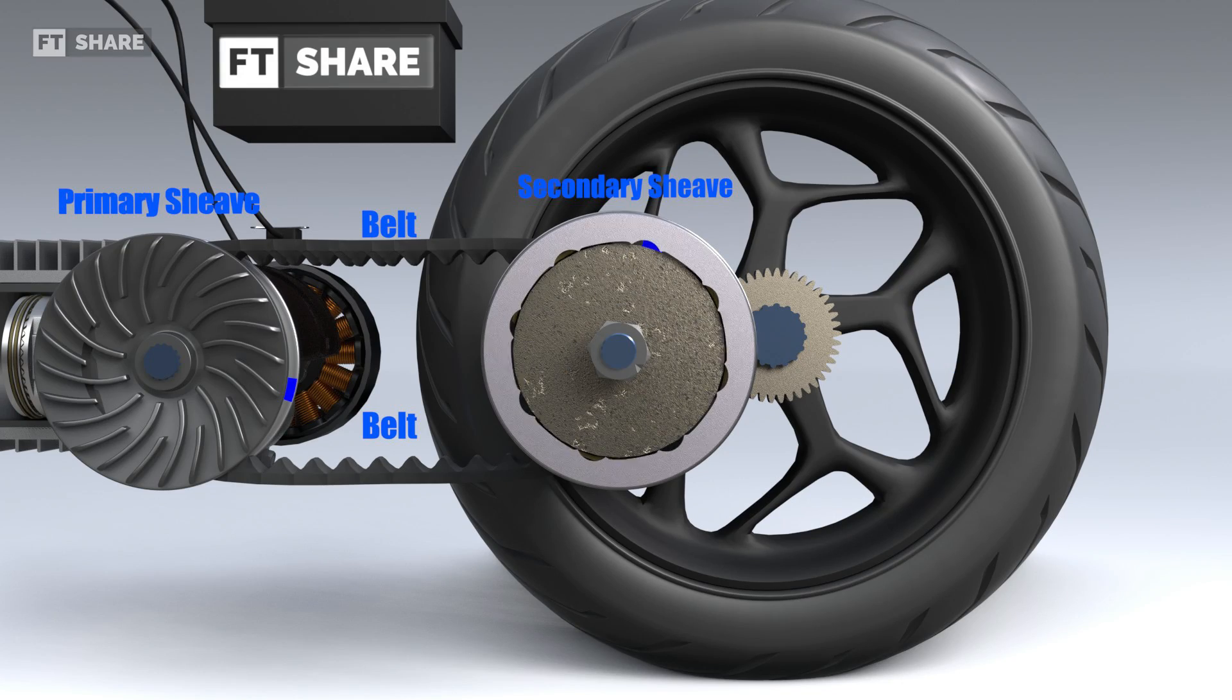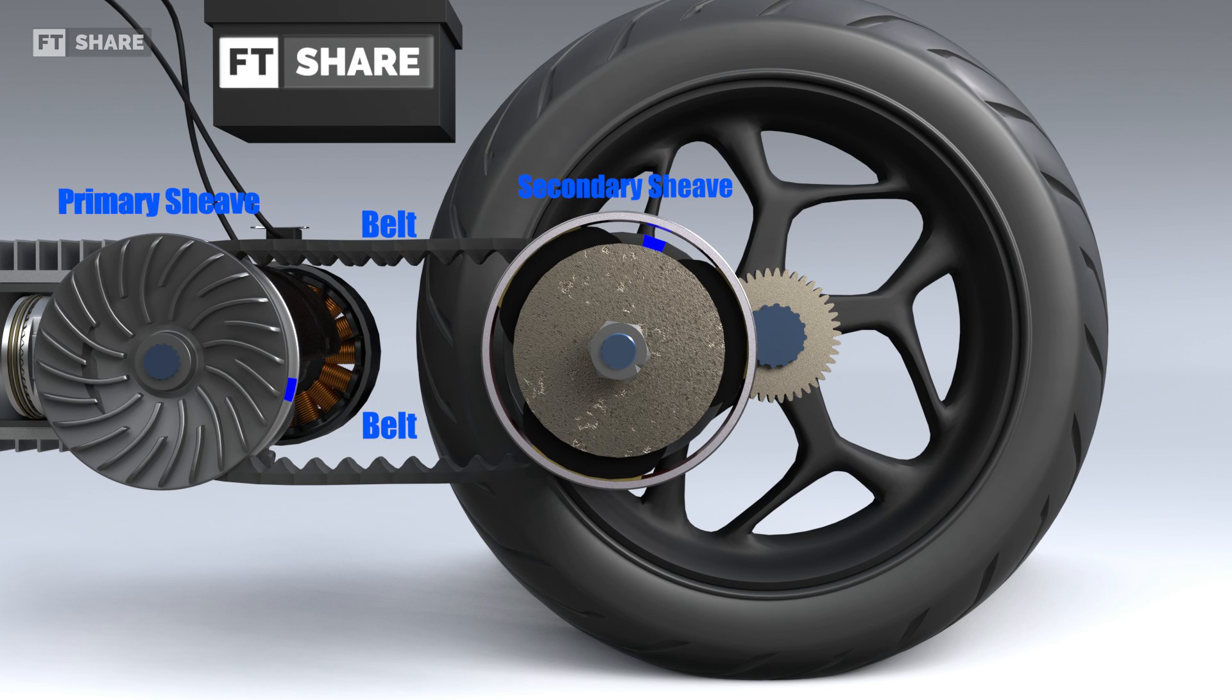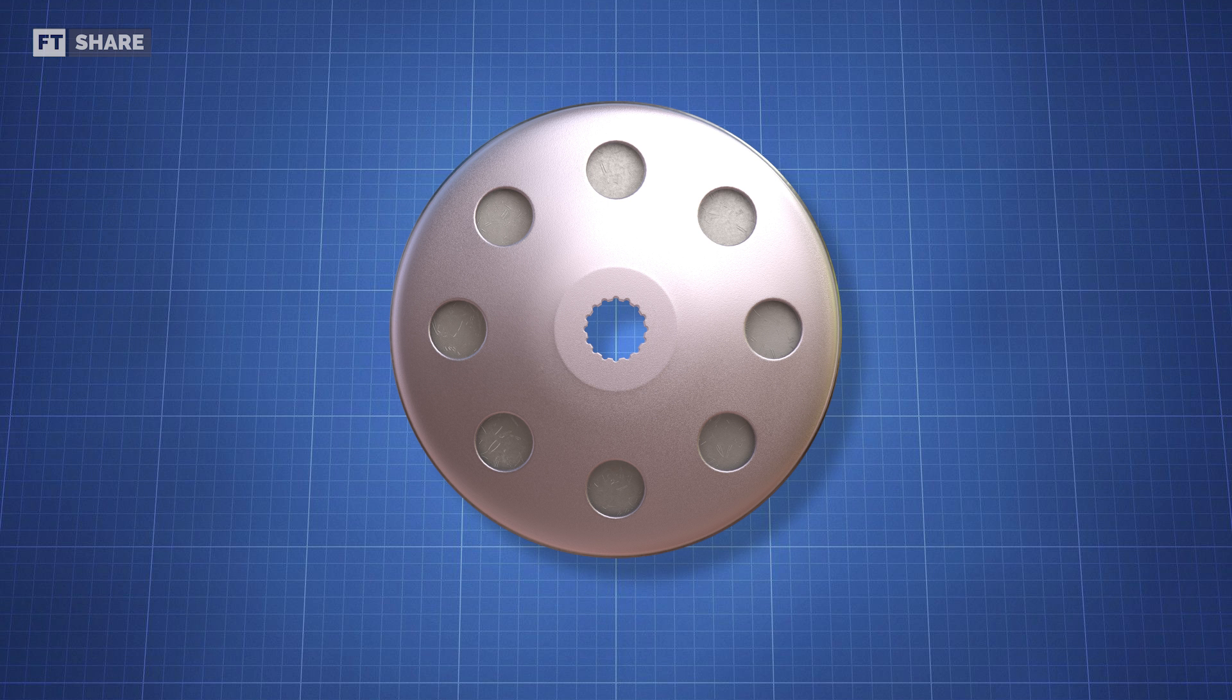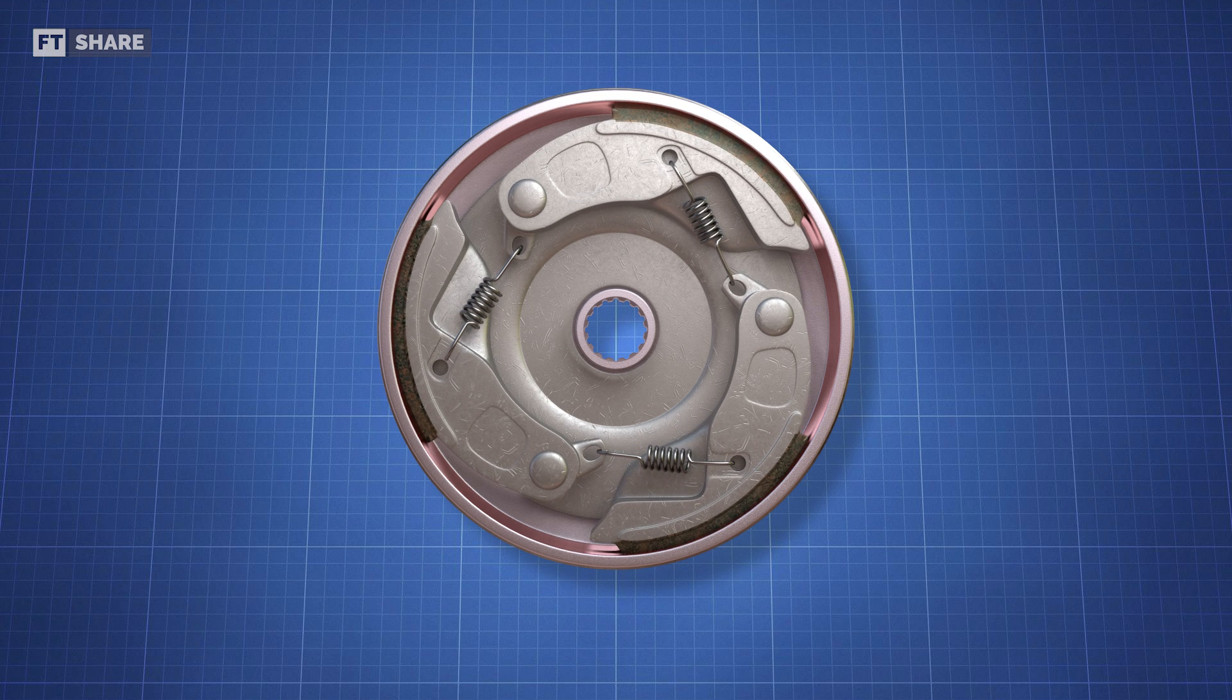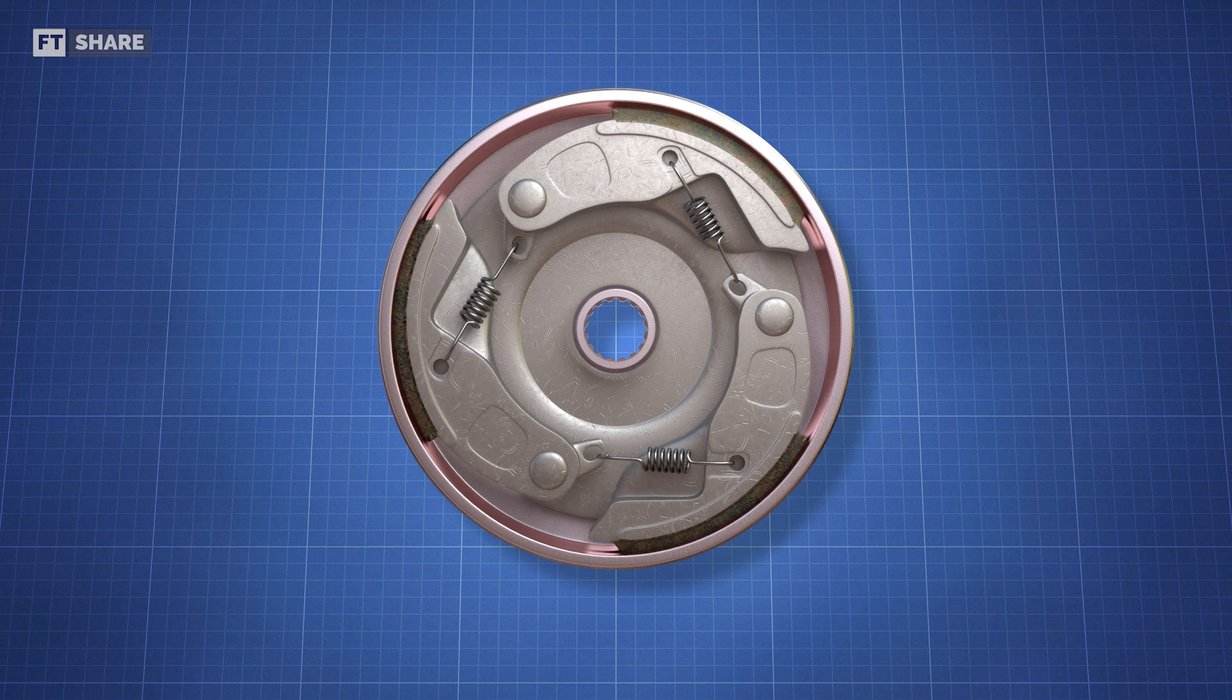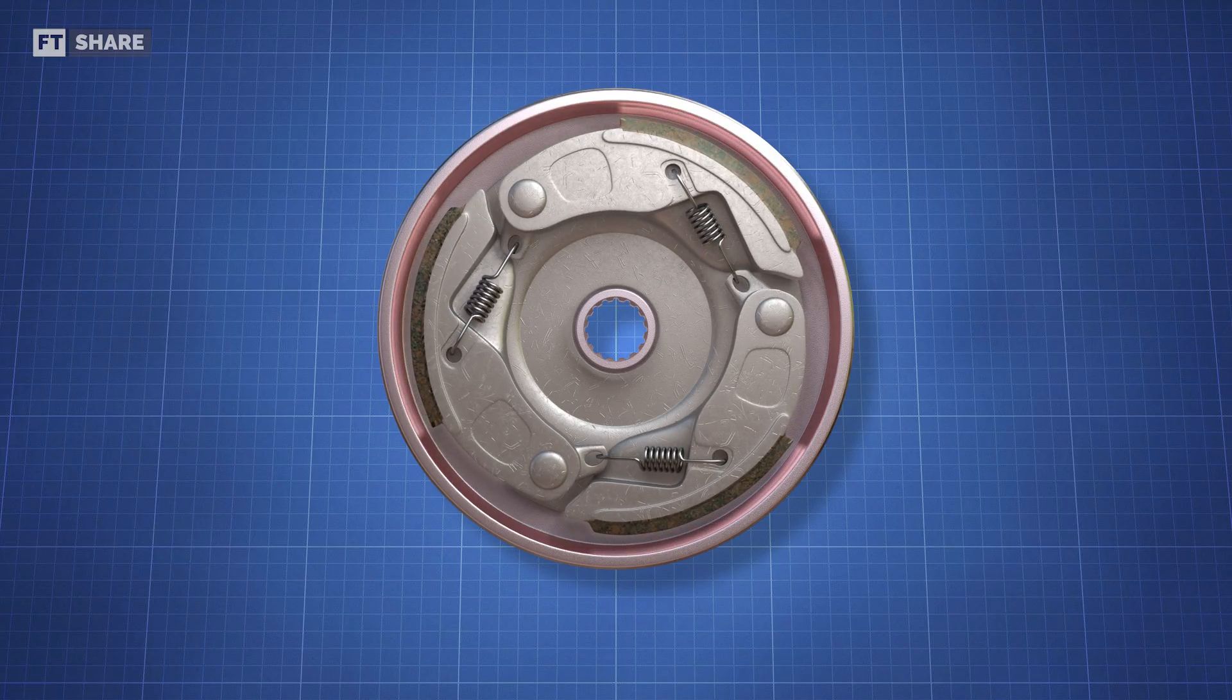But it doesn't stop there. This transmission system also includes a centrifugal clutch assembly that functions to disengage and engage the rotation generated by the engine to the wheel. The inner part of this clutch consists of weighted arms held by tension springs. These arms are connected to the pulley or secondary sheave, while the clutch housing is connected to the output gear.